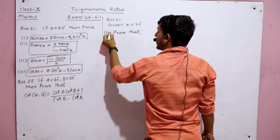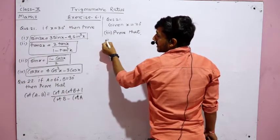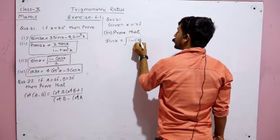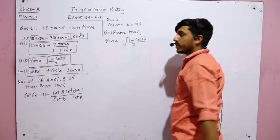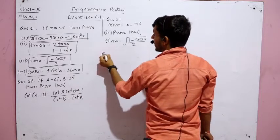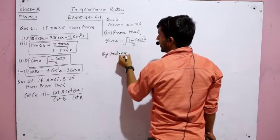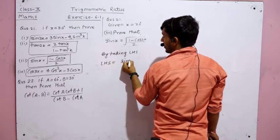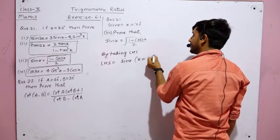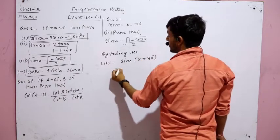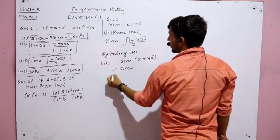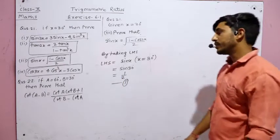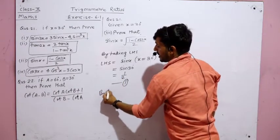For part 3, we need to prove sin x = √((1 − cos 2x) / 2), with x = 30°. Taking LHS: LHS = sin 30° = 1/2. This is equation number 1.